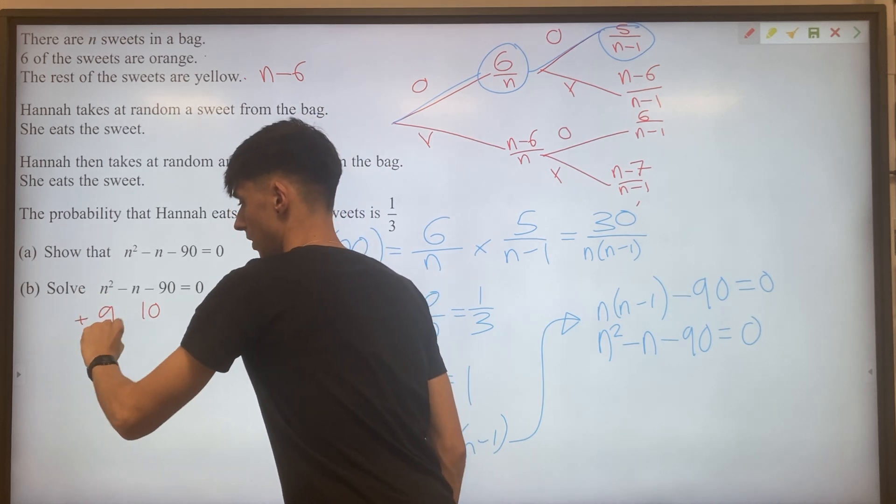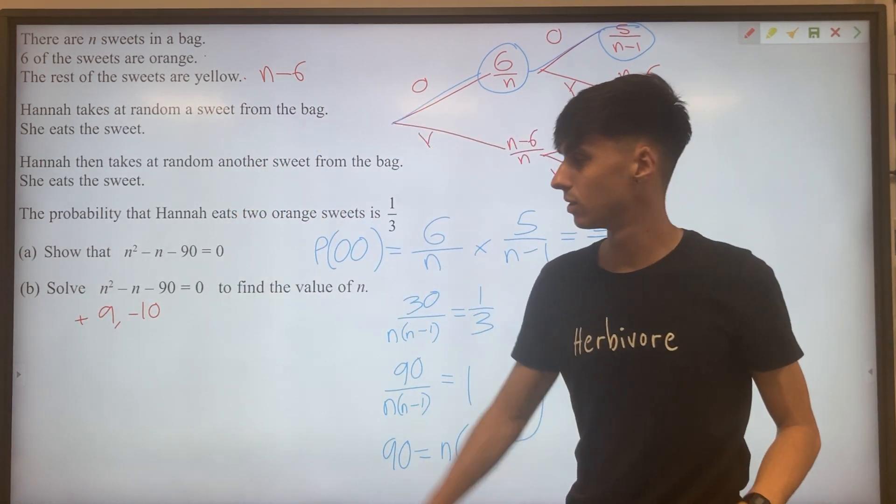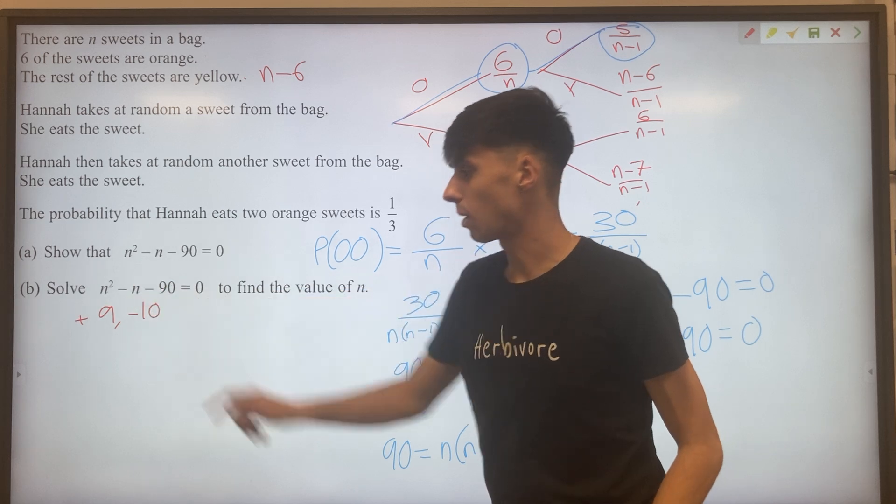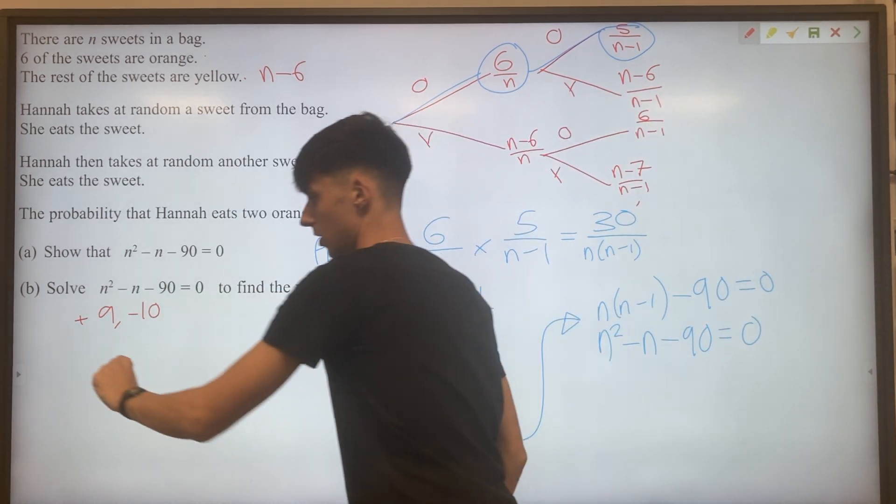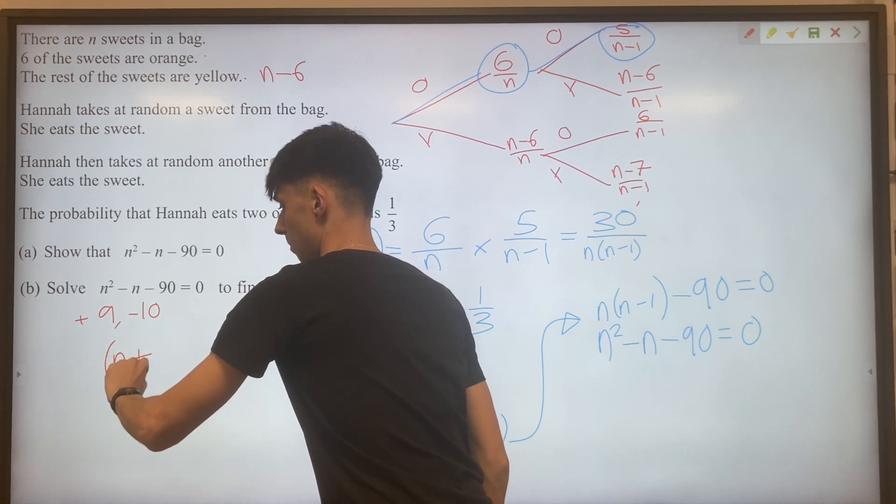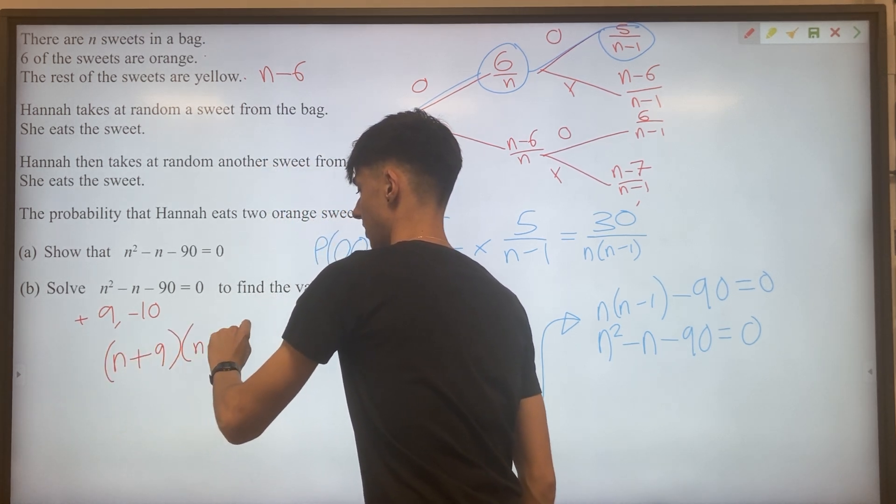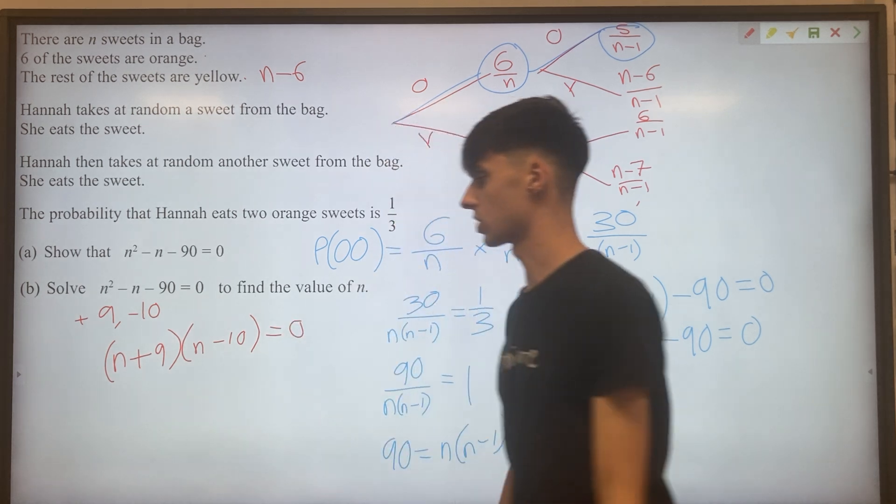It's going to have to be plus nine and minus 10 to add to give you a minus one. So then we can fill in our double brackets for this quadratic. We've got N plus nine brackets N minus 10 equals zero.